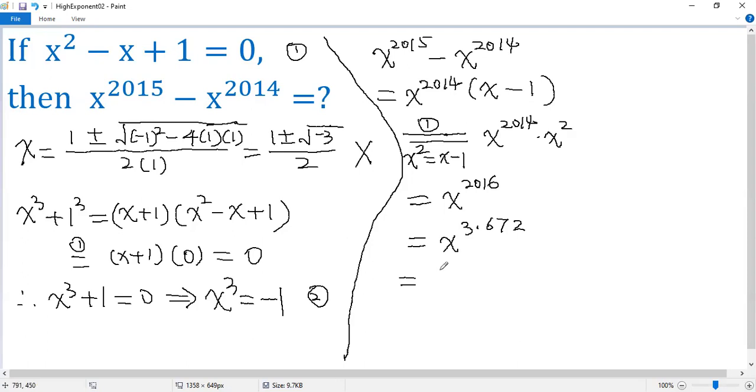So we get x to the power of 2016. We use the second condition x³ equals negative 1, raised to the power of 672. So the final answer is 1.